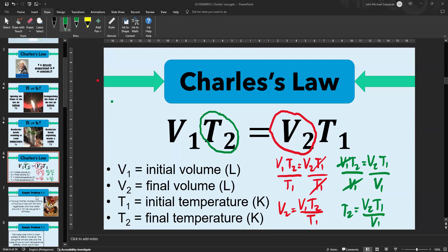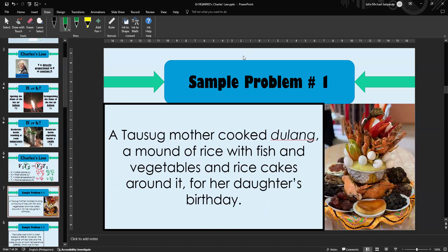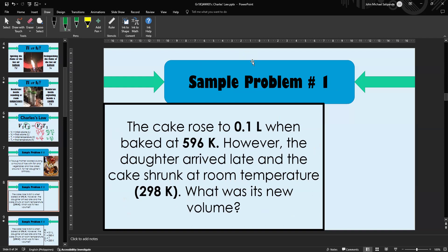Sample problem number one: A Tausug mother cooked a boodle with rice, fish, vegetables, and rice cakes for her daughter's birthday. The cake rose to 0.1 liter when baked at 596 Kelvin. However, the daughter arrived late and the cake shrunk at room temperature, 298 Kelvin. What was its new volume? In problem solving, we list the given values. 0.1 liter is V₁, 596 Kelvin is T₁, 298 Kelvin is T₂. We're asked to find the new volume V₂, so that's our point of interest.